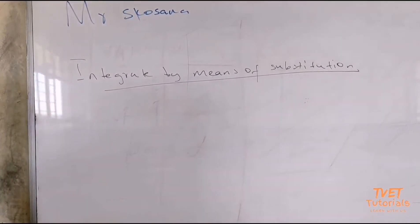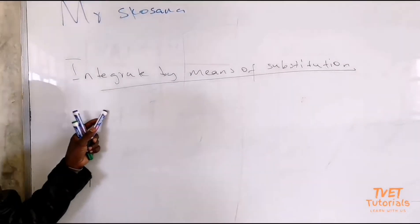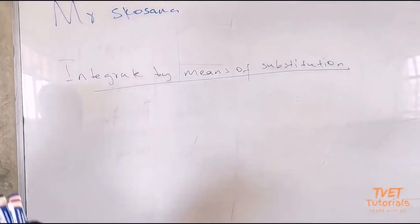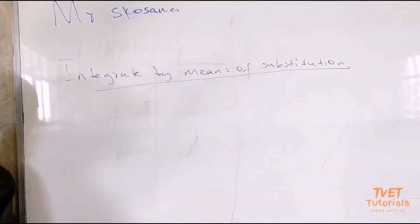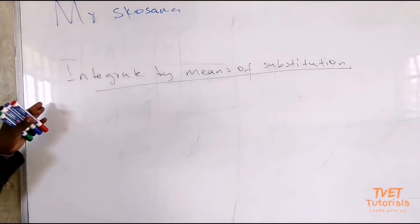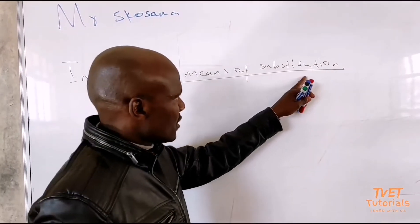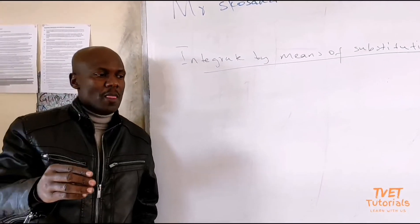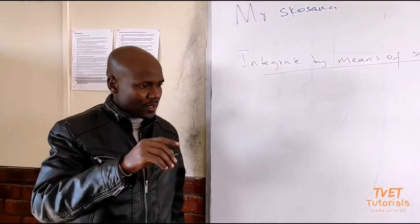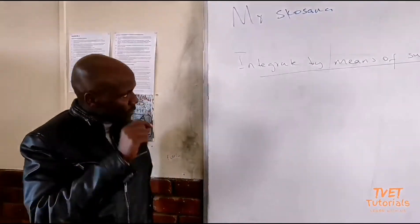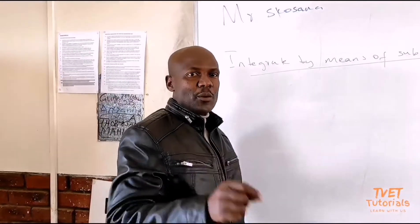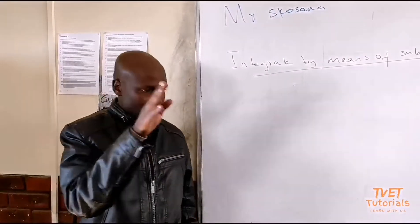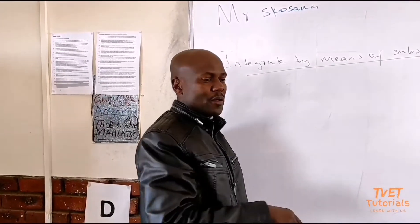We are going to integrate by means of substitution. We will be given an integral whereby we are going to use substitution — in other words, we are going to let something equal to u. The intention of letting something equal to u is that we want to cancel something. Something must cancel something.